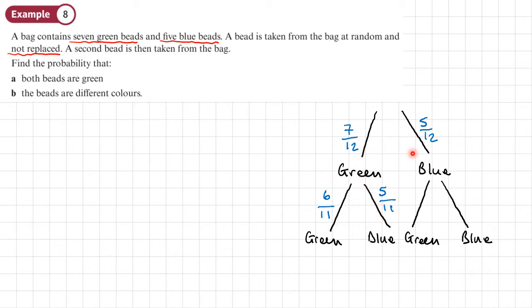But the number of blue is still five because I haven't taken a blue bead out. If I go down this route, then we'll go down this route on the other side. So again, these will be out of 11.